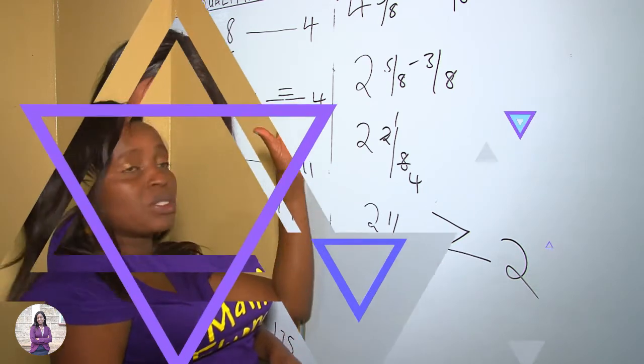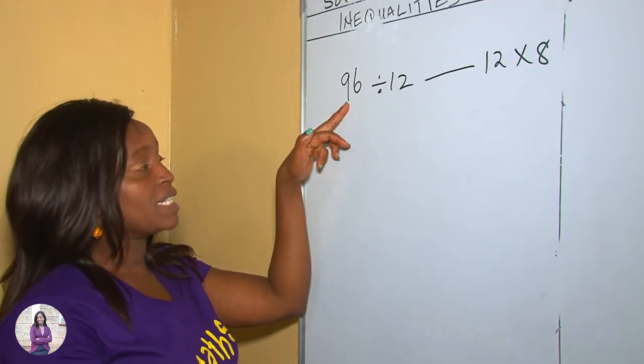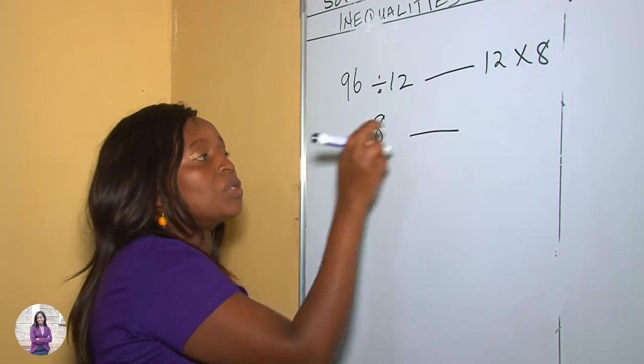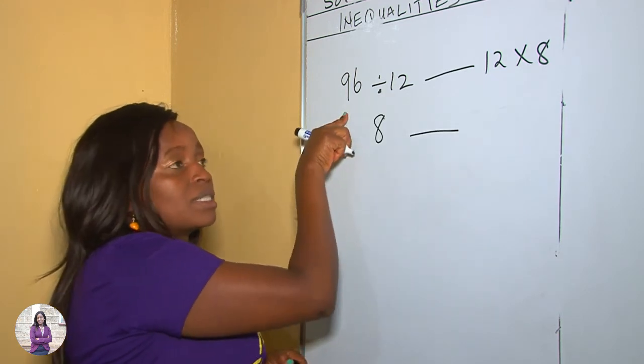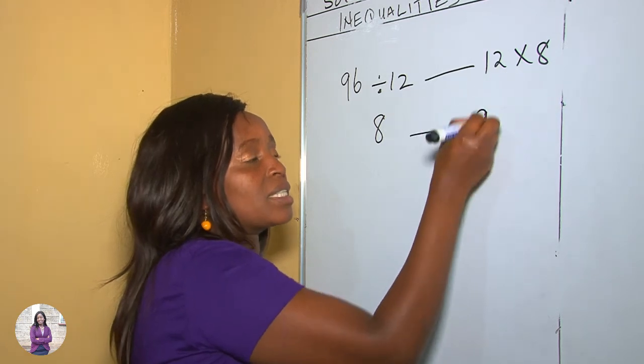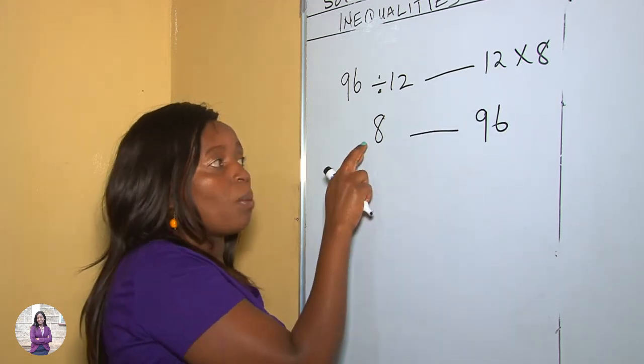Let's do our last example. We start solving on our left, so 96 divided by 12 is 8, because 8 times 12 is 96. On our right, 12 times 8 is 96. Therefore, when you compare 8 and 96, 8 is less than 96, and this is our sign.